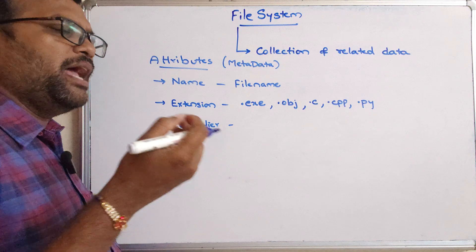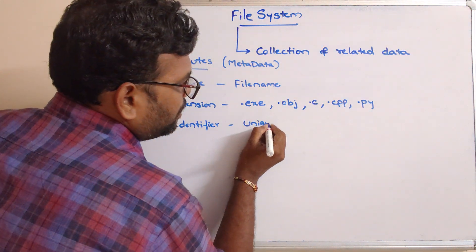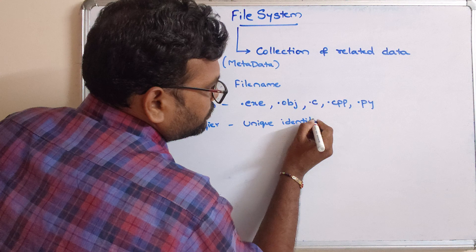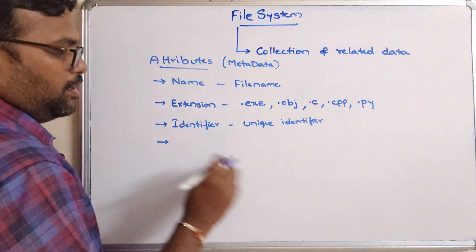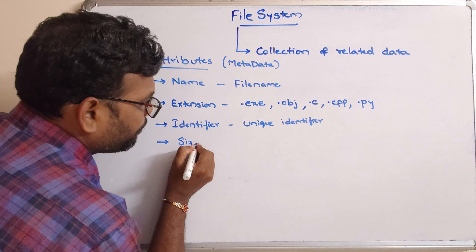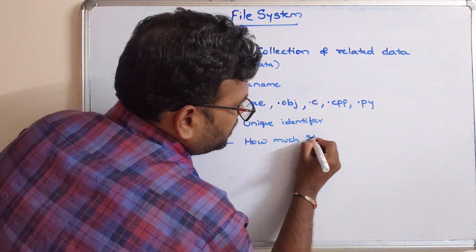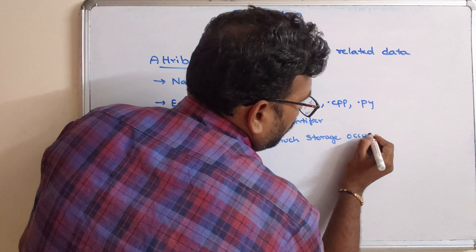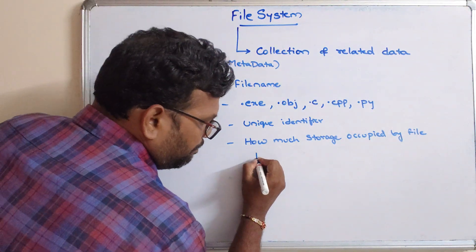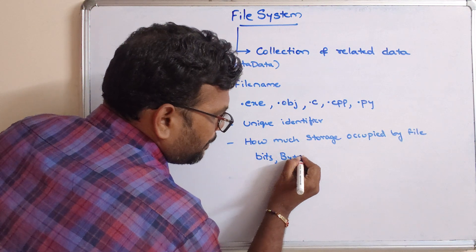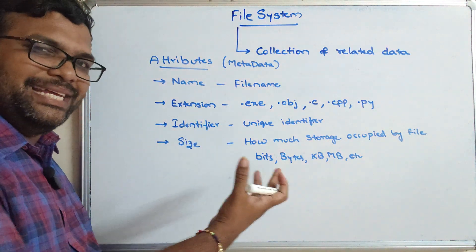The next attribute is the identifier. Every file will have a unique identifier which will be used by the file system to access it. After that, there is the size of a file — how much storage is occupied by a file. Usually the storage of any file can be represented with bits, bytes, kilobytes, megabytes, etc.